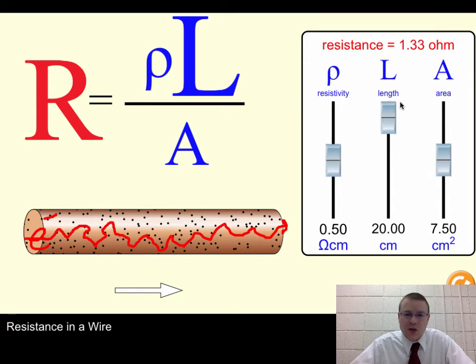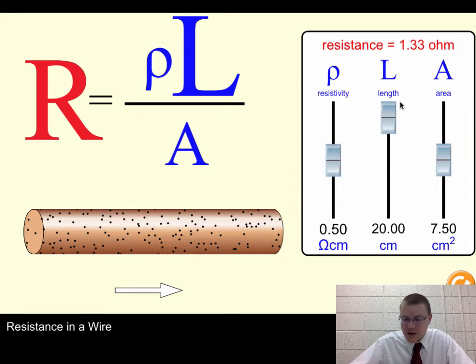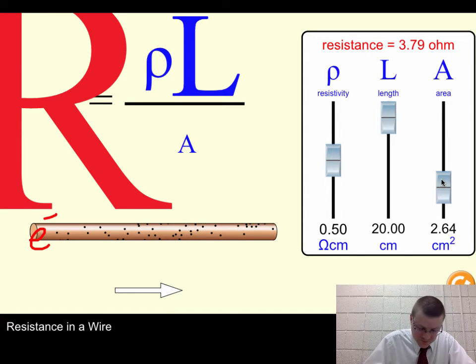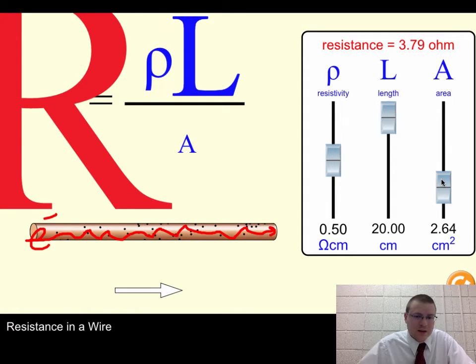All right, what else can I do to increase my resistance? To increase my resistance, I could change my area. Let's make the hallway smaller. So now as the hallway shrinks, we've got the same amount of people in the hallway. We've got a really long hallway, but it's very, very skinny. So with a skinny hallway, again, that electron is trying to fight its way down the line, and it's very, very restrictive. It's very hard to move from one end of the wire to the next.